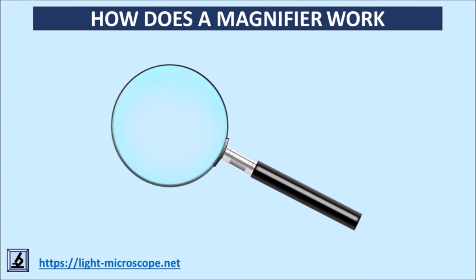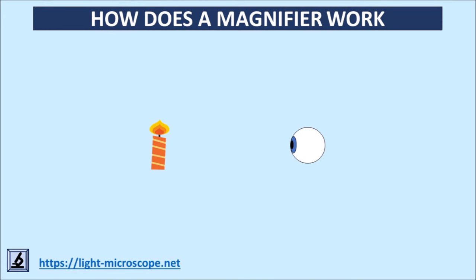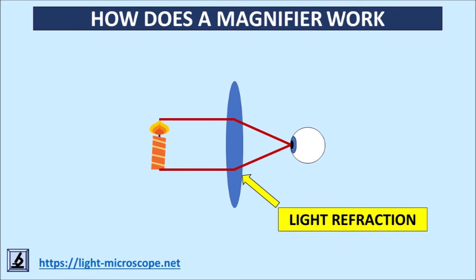Now a convex lens is placed between the eye and the object. The course of the light rays is now different. The object reflects the light again, but it is refracted as soon as it enters the lens and then again when it leaves it.